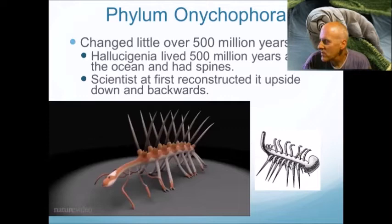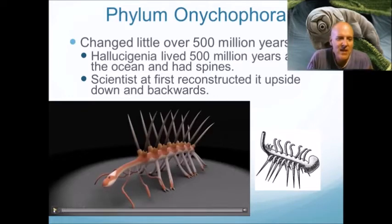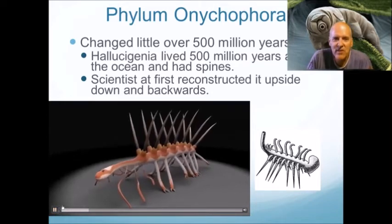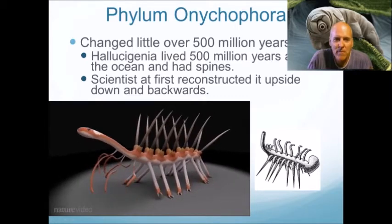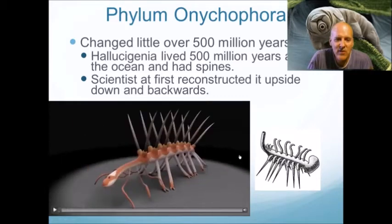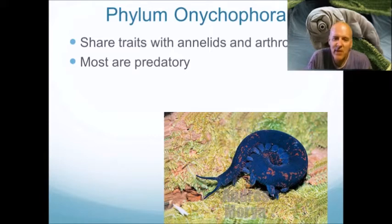Phylum Onychophora has changed very little over the last 500 million years — that's a huge amount of time. The dinosaurs went extinct only 65 million years ago, so 500 million years is half a billion years. Hallucigenia lived around that time; we found fossils of them, named so because it looks like something from a hallucination. They first reconstructed it upside down and backwards before finding better fossils. They share traits with annelids and arthropods — a segmented worm-like body but with legs and claws like arthropods.